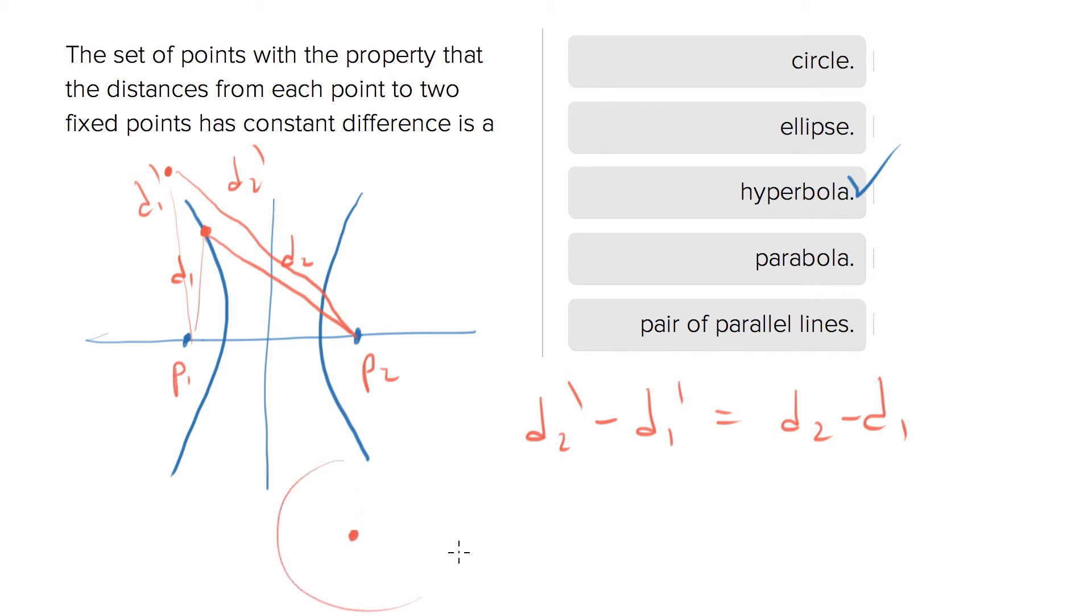Circle, by the way, is all points constant distance from a point. Parabola is all the points that are equidistant from a line and a point.